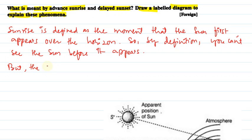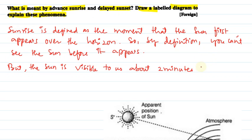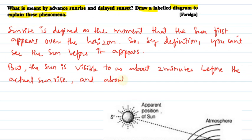But the sun is visible to us about two minutes before the actual sunrise, and about two minutes after the actual sunset.